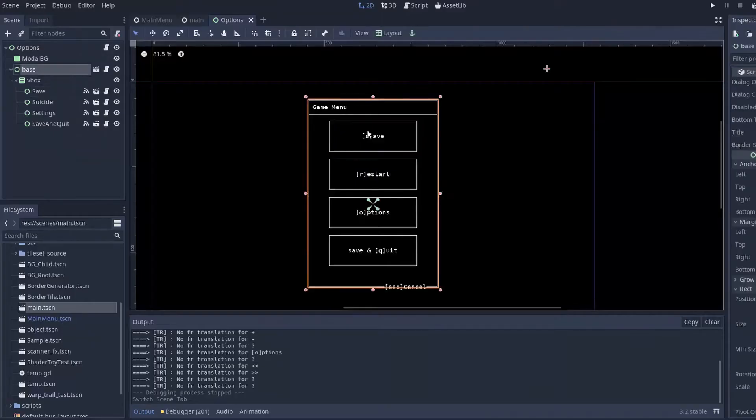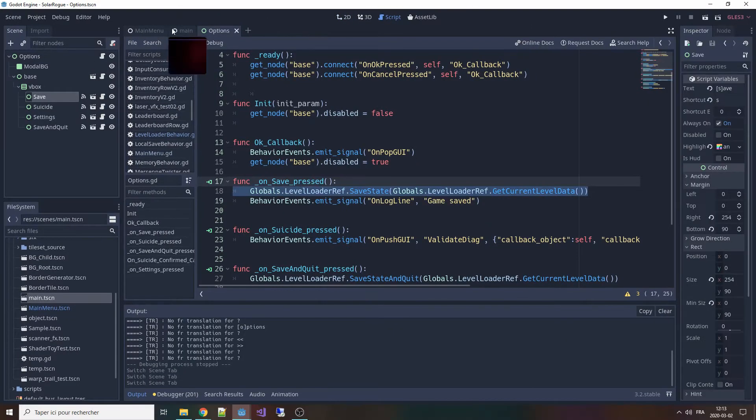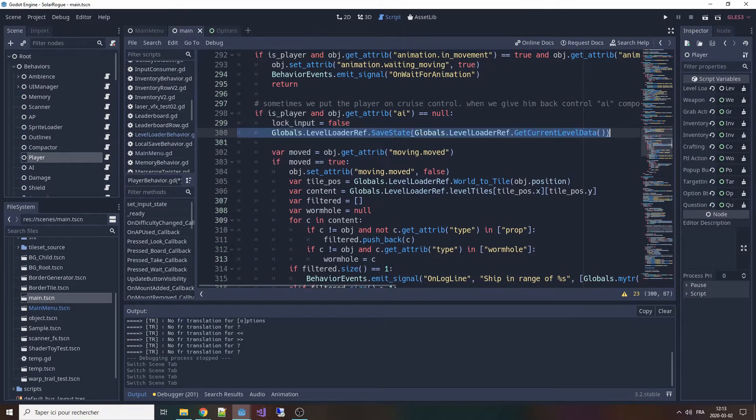Of course I already have a single point of entry to save my whole game so it wasn't really difficult to just at the end of every turn call this method and then we're all done right?